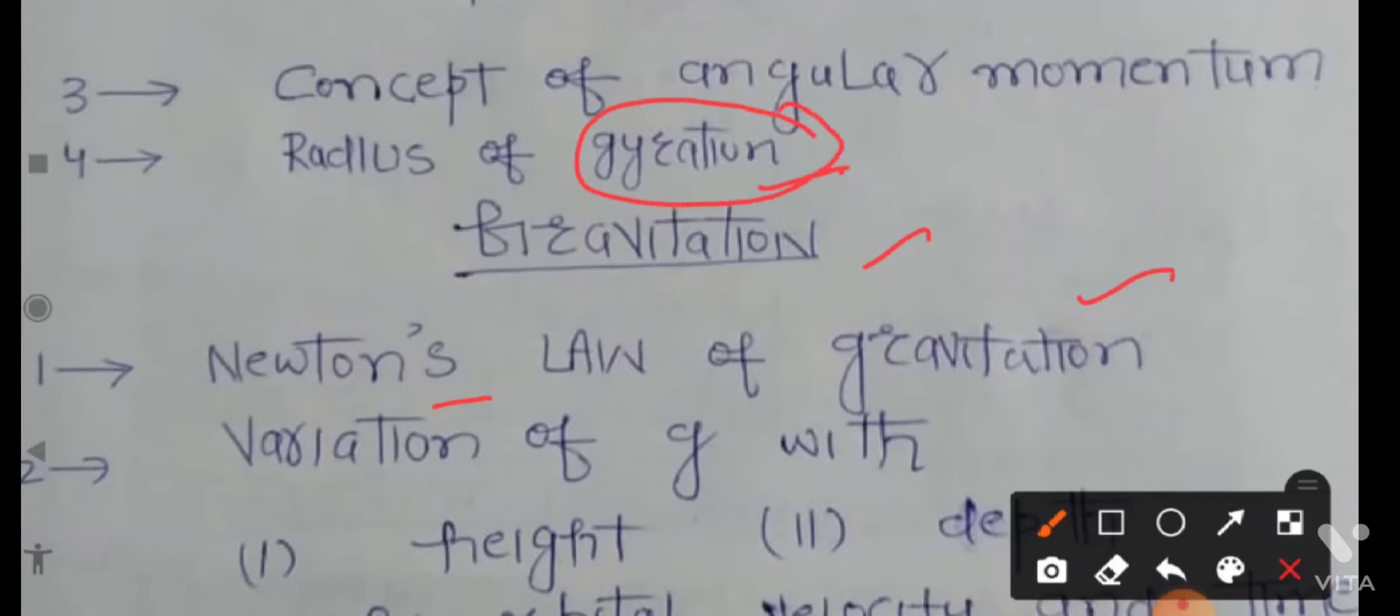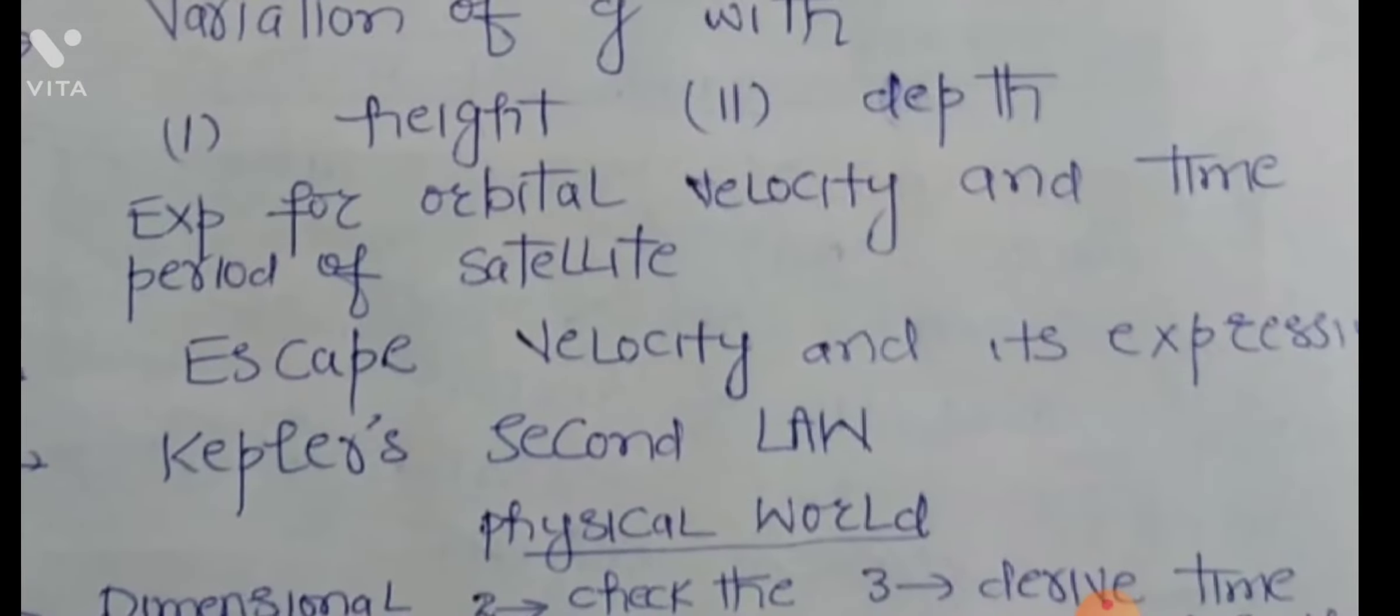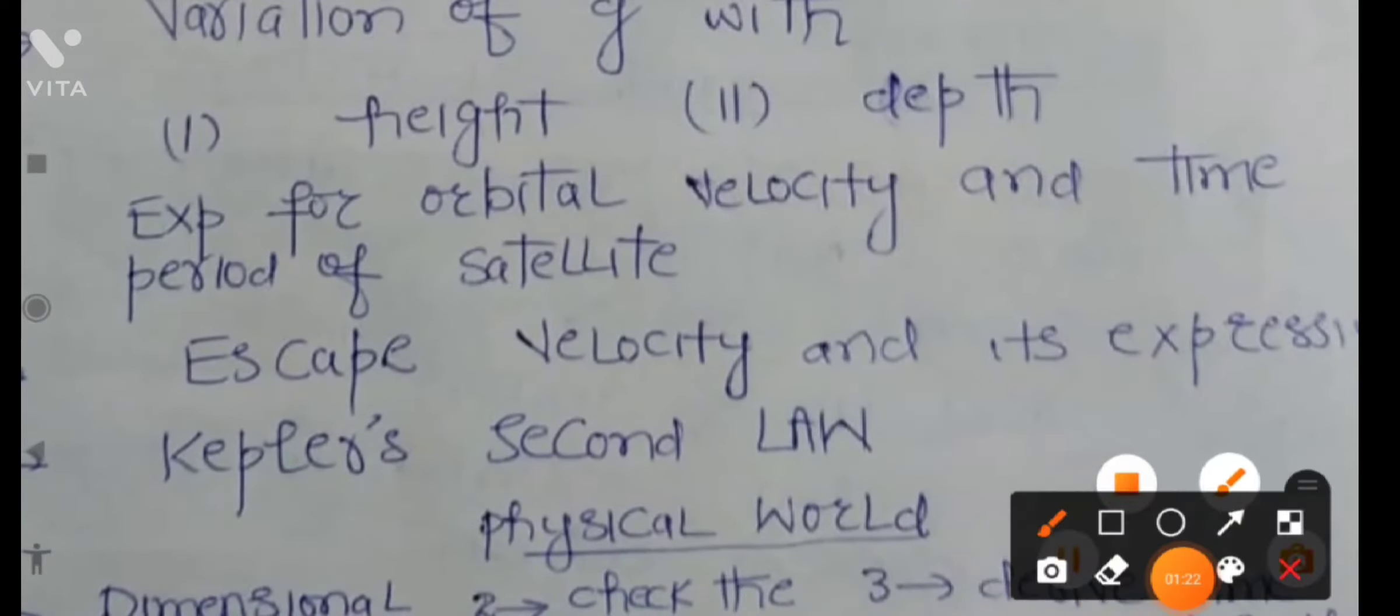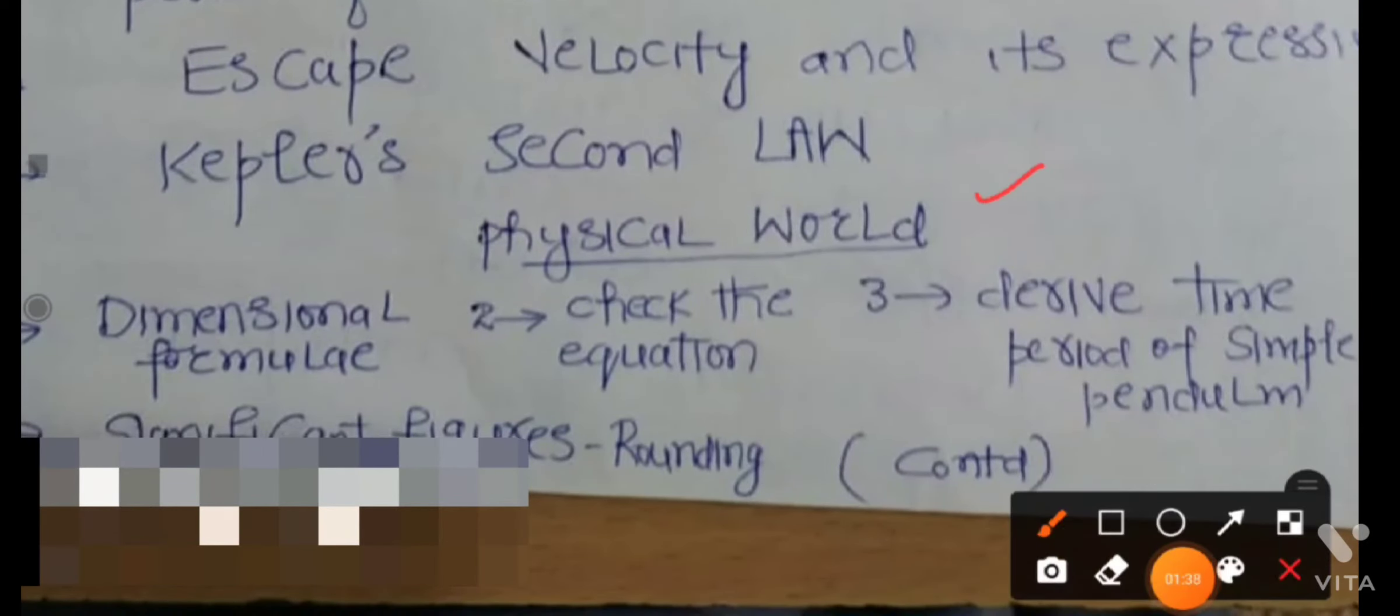Variation of gravitation with height and depth. Then experiment for orbital velocity and time period of satellite, escape velocity and its expression, Kepler's second law.